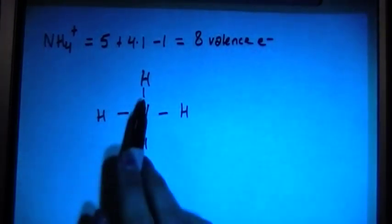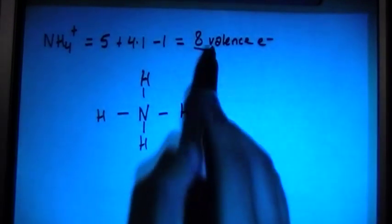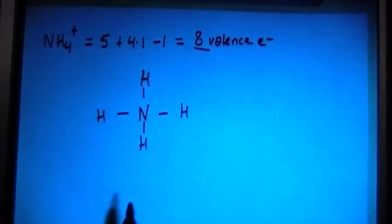We can go ahead and connect those with single bonds. And if you notice, that is 2, 4, 6, 8 valence electrons. So that is actually the correct structure.